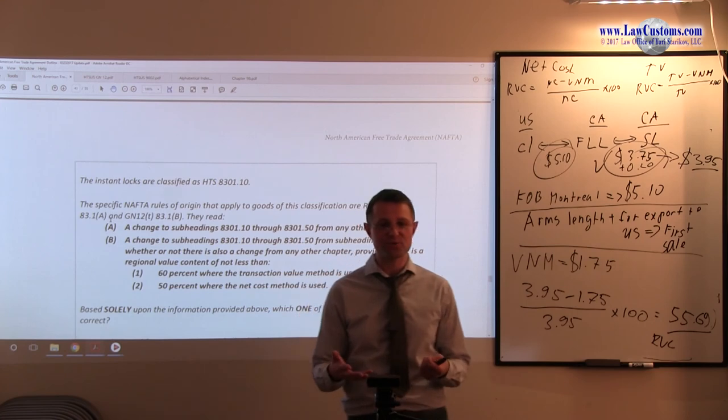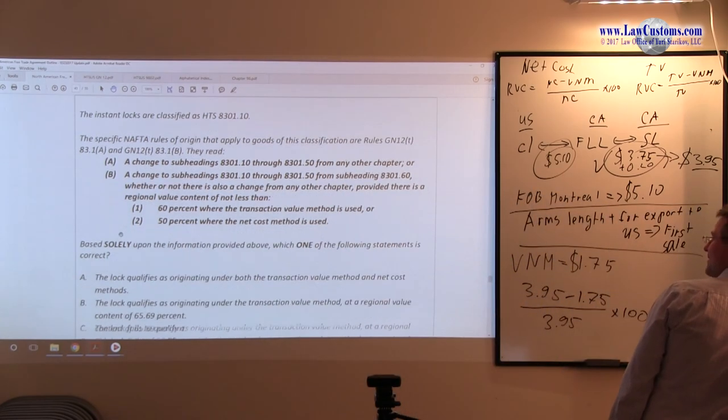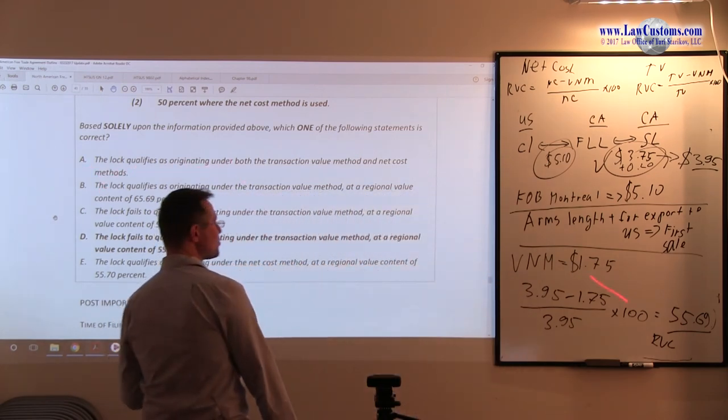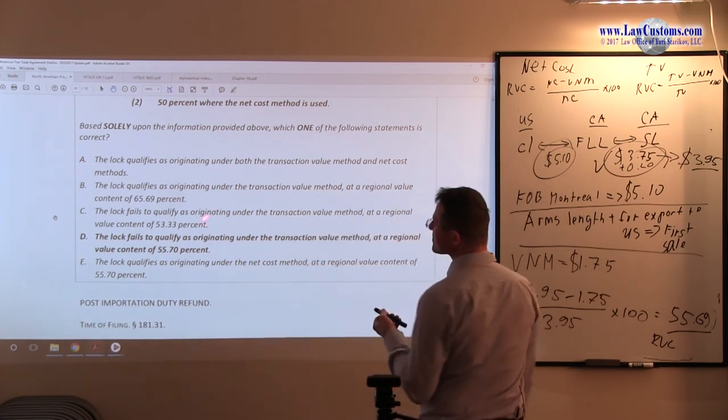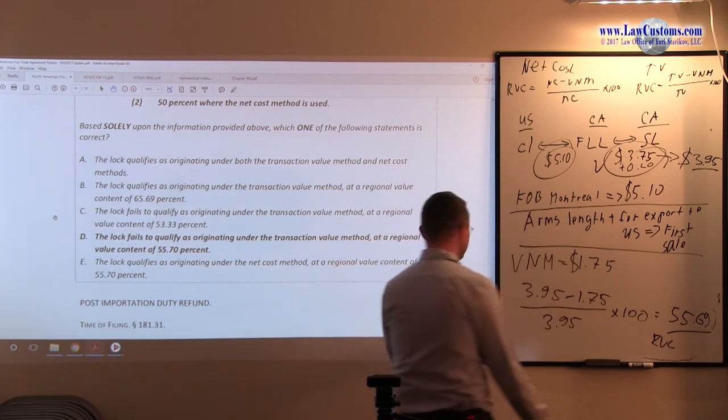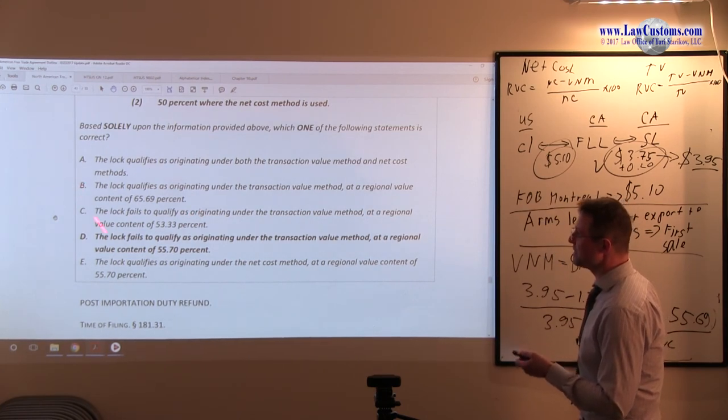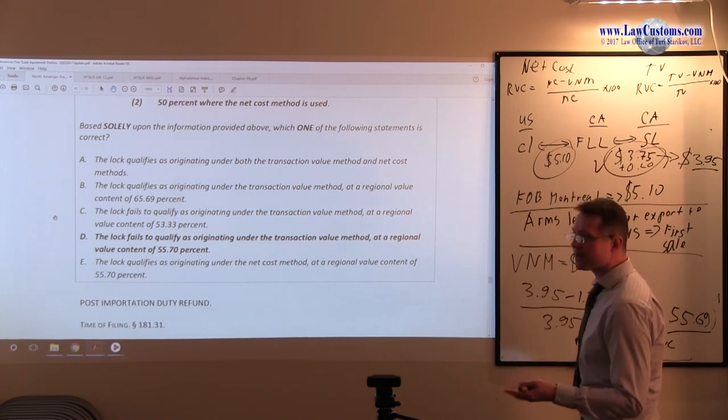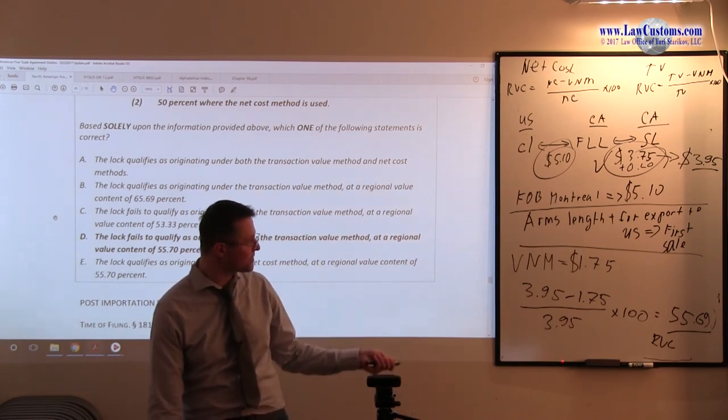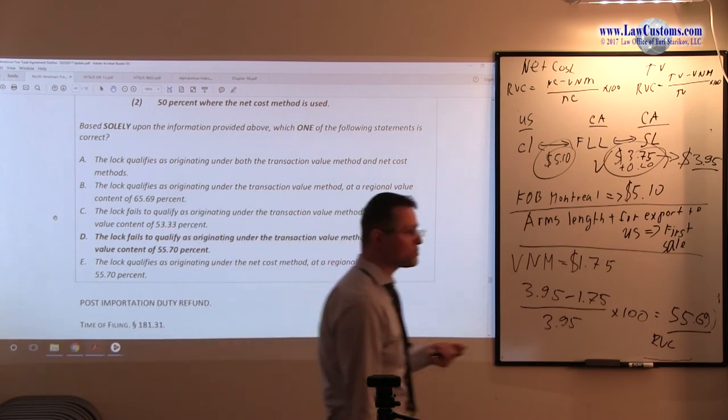So, after this performing this analytical checks, we are ready to dive in into the answer choices, right? So, let's take a look. Alright, so, we have the following. Based solely upon the information provided, ok, we know that. The log qualifies as originating. Looks like it doesn't, so we can skip that. The log qualifies as originating under transaction value method as original RVC is 65.69%. We have 55.69. So, B is not our choice, right? The log fails to qualify as originating. So, we know it fails to qualify. So, we can exclude A, B and E right away, right? Because it doesn't qualify. So, D and C are really the battlegrounds. And it comes down to the percentages. And the percentages, the only way you can derive it is if you understand the first sale rule and you plug these numbers in. So, we know that 55.69 is our choice. And we have 53.33 and 55.70.